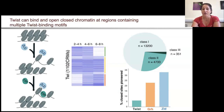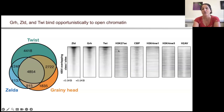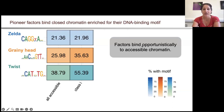We wanted to dig in more and understand what defines these three classes of binding sites. When we started looking at the abundant class 1 open and accessible sites, we found extensive overlap of the binding of Zelda, Grainy Head, and TWIST to the same open accessible regions. Furthermore, these regions are enriched for active chromatin marks like H3K27 acetylation, the enzyme CBP that deposits this mark, H3K4 trimethylation, and H2A.B. When we looked at the motifs underlying these, we found they were actually not particularly enriched in these bound regions compared to all accessible regions, suggesting these factors appear to bind opportunistically to this accessible chromatin.